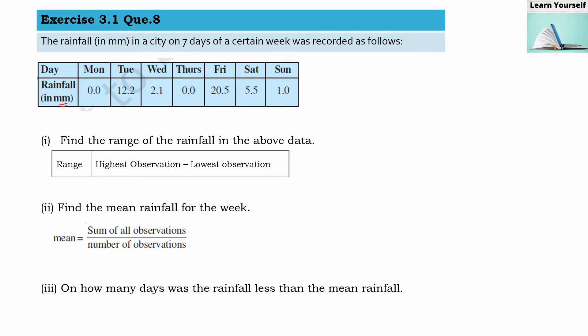First question is find the range of the rainfall in the above data. What is the range? Range is highest observation minus lowest observation. So here we are going to find the highest observation. This observation is highest, that is 20.5.